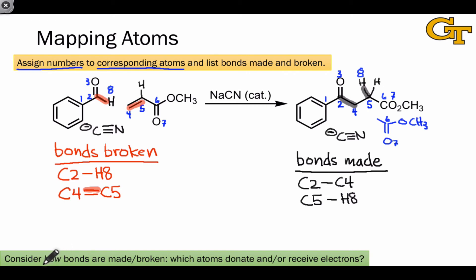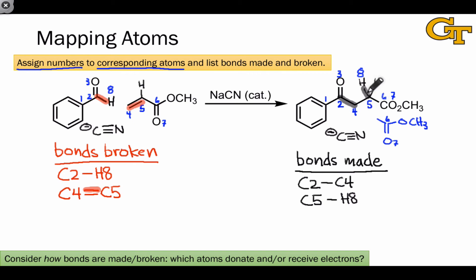Once you've generated this list, the way to use it is to think deeply about how bonds are made and broken. For every bond that's made, where did the electrons come from? Where did the electrons come from in the C2–C4 bond — carbon-2 or carbon-4? What about the carbon-5–hydrogen-8 bond? Is it more likely that H⁻ donated electrons to a positively charged carbon-5, or that a negatively charged carbon-5 donated electrons to an acidic or positively charged H8? Questions like this will help you unearth the mechanism and generate reasonable possibilities for elementary steps.